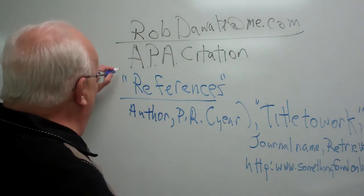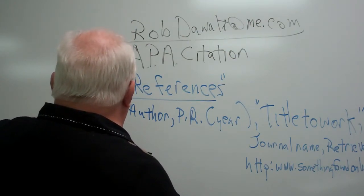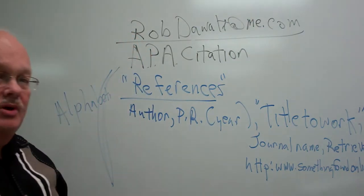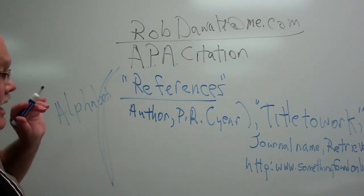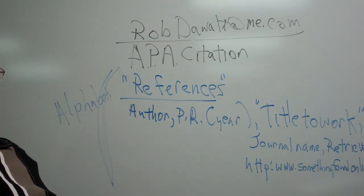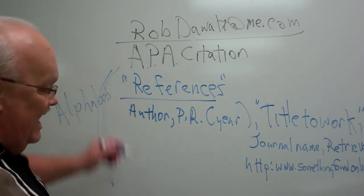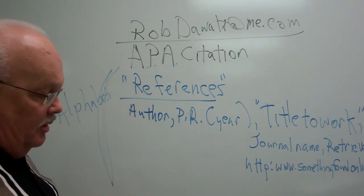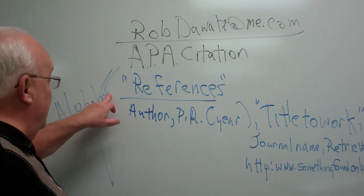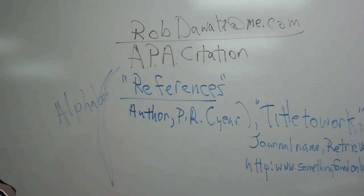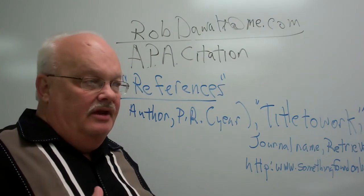The last thing: all references on your reference page are in alphabetical order — alphabetical by author last name. So if Daywalt is your first one, that's the lowest alphabetically. If someone's name is Apple, that goes above Daywalt. It's A through Z, top to bottom. Don't put them in the order they appear in your written work.